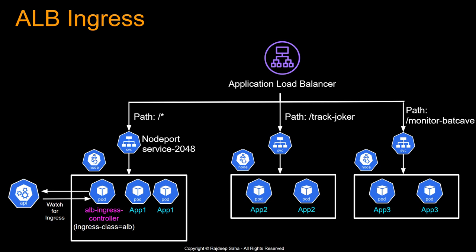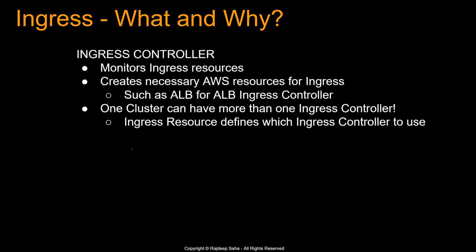Since we're using an AWS native service — Application Load Balancer — it comes with lots of nice features, which makes your life easier when managing a cluster. To summarize, there are two components: the ingress controller, which monitors ingress resources and creates necessary AWS resources such as an application load balancer; and the ingress resource. One cluster can have more than one ingress controller — if you specify ingress class nginx instead of ALB, you can use the nginx ingress controller for that application.